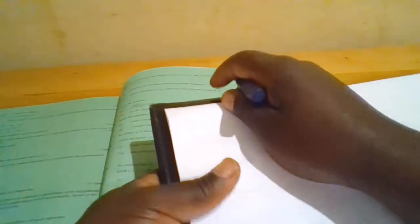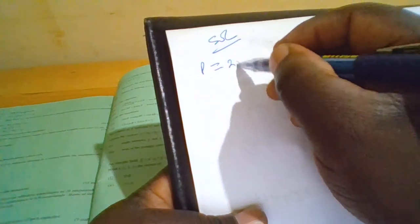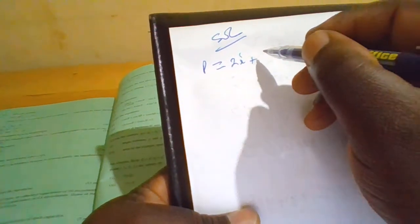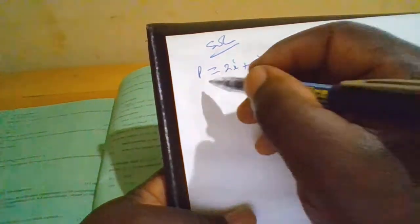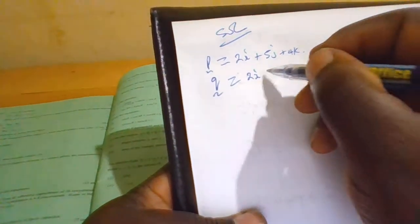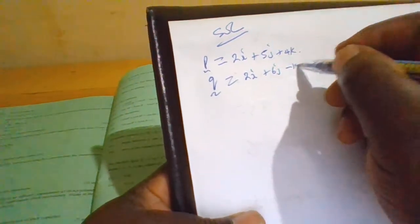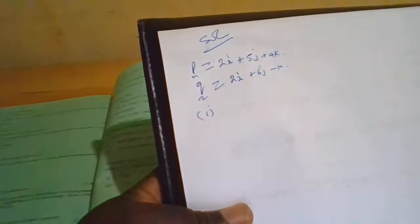So we need to write that we have vector p is given by 2i plus 5j plus 4k, and q is given by 2i plus 6j minus k.